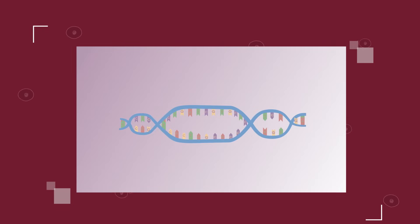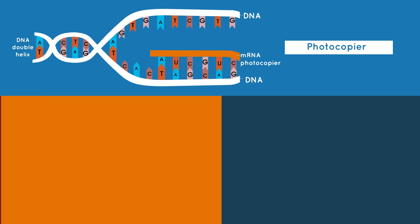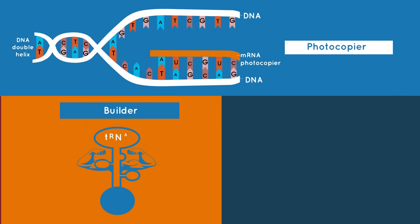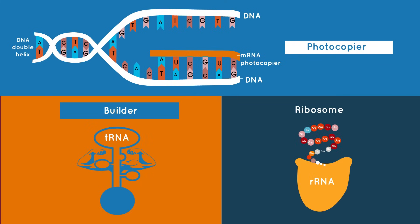The tRNA is found in the cytoplasm. For many years, we just thought RNA was the DNA photocopier as mRNA, the protein builder as tRNA, and found in ribosomes as rRNA.